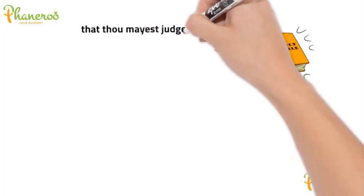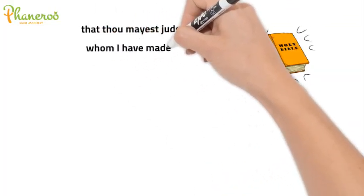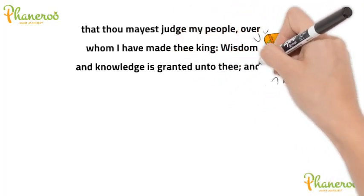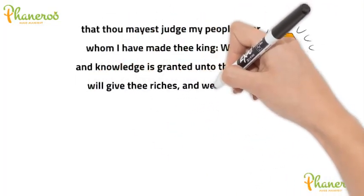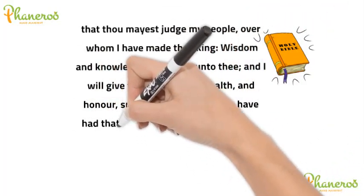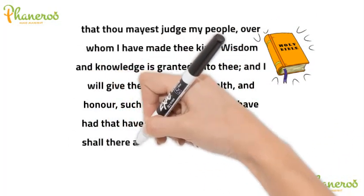That thou mayest judge my people, over whom I have made thee king. Wisdom and knowledge is granted unto thee, and I will give thee riches, and wealth, and honor, such as none of the kings have had that have been before thee, neither shall there any after thee have the like.